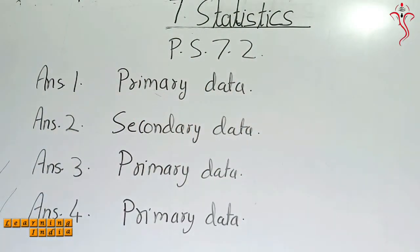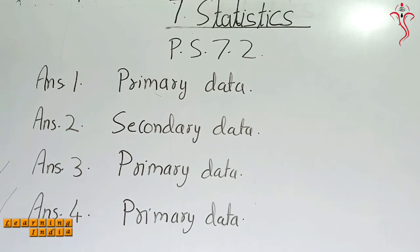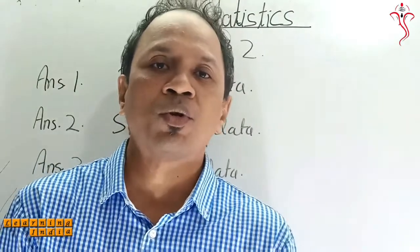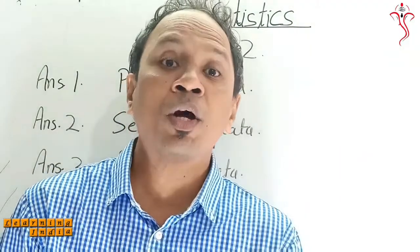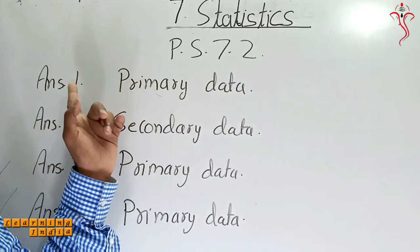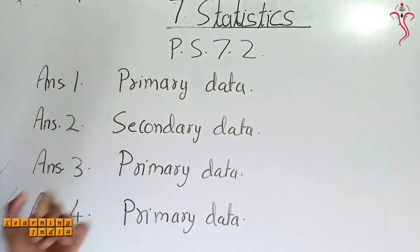For question one, the information about attendance of every student is collected by visiting every class in the school. You have to actually go to every class and take the attendance of every student. Since you are doing that work yourself, that becomes your primary data.